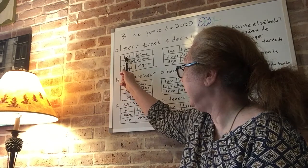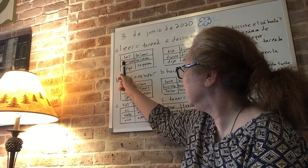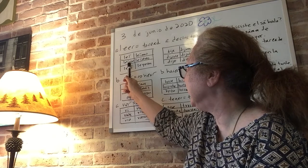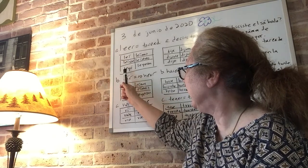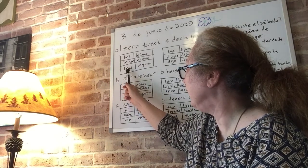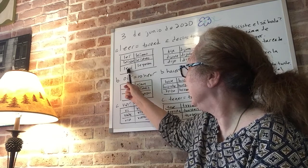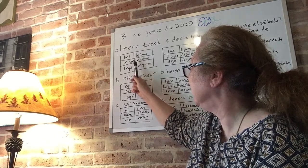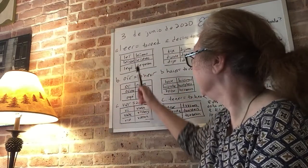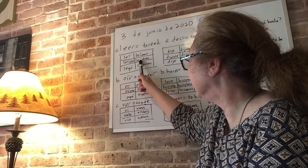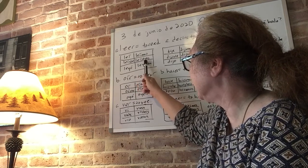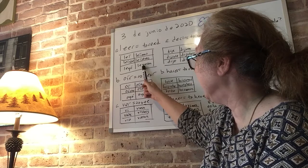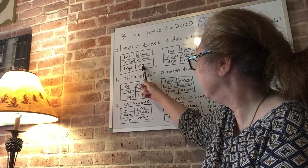Yo leí, L-E-I with an accent on the I. Tú leíste, L-E-I-S-T-E with an accent on the I. Vosotros leísteis, L-E-I-S-T-E-I-S with an accent on the I. And ellos, ellas, and ustedes leyeron with a Y — you take out the I and add a Y, and there's no accent. Leyeron.